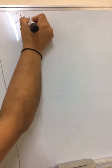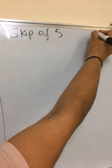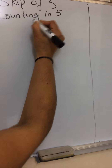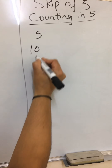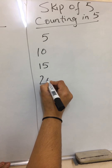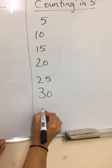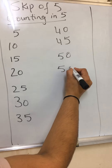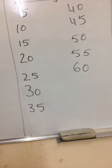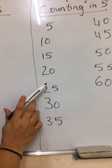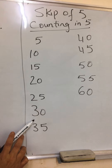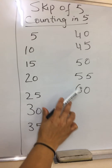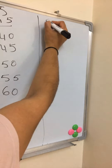Now we are going to do skip of five, which means counting in fives. Five, ten, fifteen, twenty, twenty-five, thirty, thirty-five, forty, forty-five, fifty, fifty-five, sixty. Let's do it again: five, ten, fifteen, twenty, twenty-five, thirty, thirty-five, forty, forty-five, fifty, fifty-five, sixty.